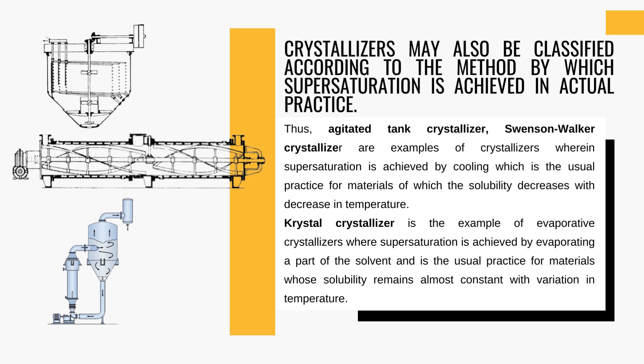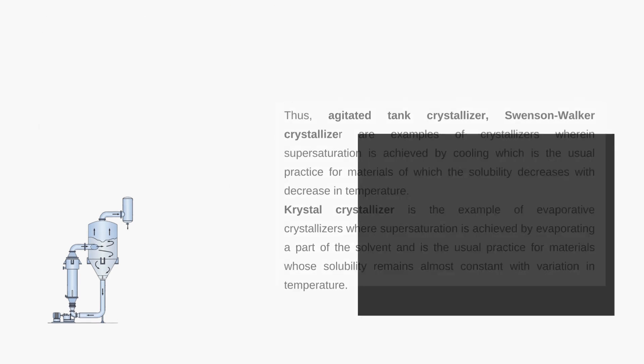Next are evaporative crystallizers. In contrast to cooling crystallizers, evaporative crystallizers achieve supersaturation by evaporating a portion of the solvent. They find application for substances with consistent solubility across various temperatures. This method is particularly valuable in industries dealing with substances like salts, where controlling crystal growth through solvent evaporation is vital for obtaining desired product characteristics and quality.